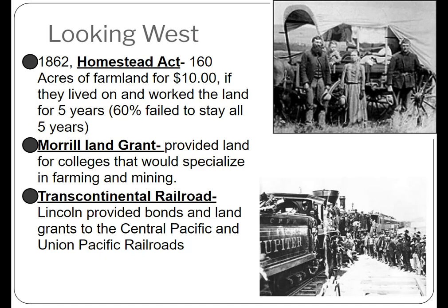Sixty percent of people who tried the Homestead Act didn't make the five years. Most of the land was west of the 100th Meridian, had far less annual precipitation, and offered limited ability to irrigate. The majority of people who went out there were not successful. But for those who were, potentially they could start their lives again in the West for relatively little money.